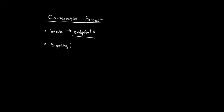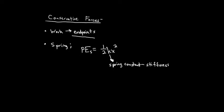The potential energy due to a spring is given by the equation one-half k x squared. Here, k is the spring constant, which physically tells you how stiff the spring is. A stiffer spring has more potential energy and can do more work. The variable x is the displacement of the spring — how far you stretch it or how far you compress it. Potential energy due to a spring is a conservative force.